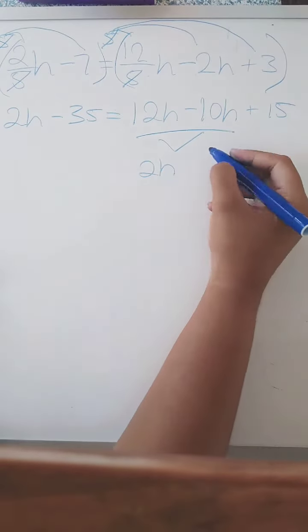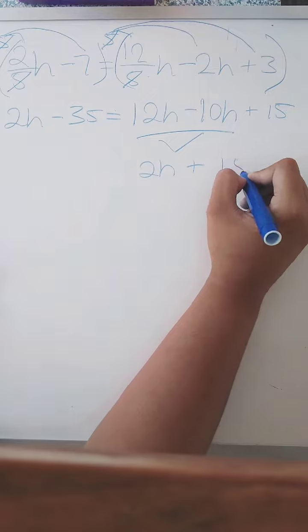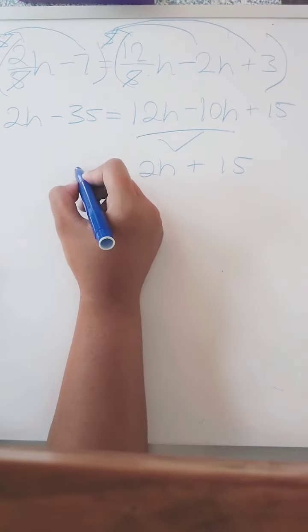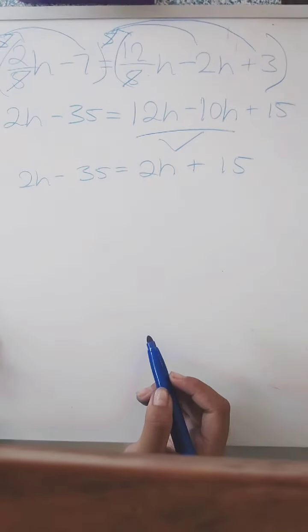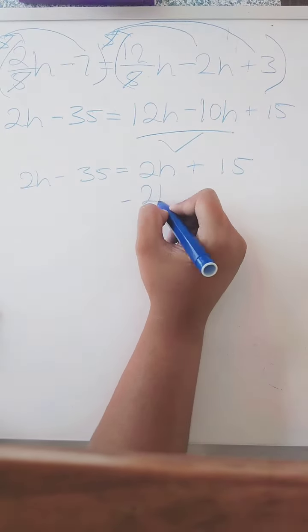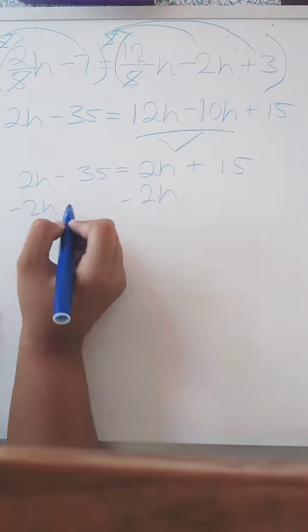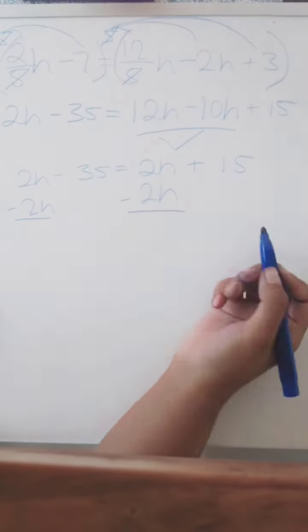Then you have to write what's left on the other side, which is positive 15. So our next step, we also have to look for like terms or compare the like terms, which is 2H. So we have to minus 2H on both sides.